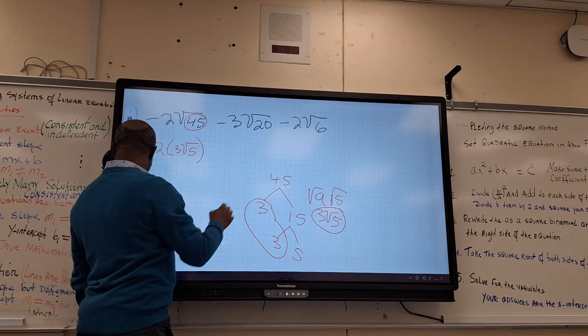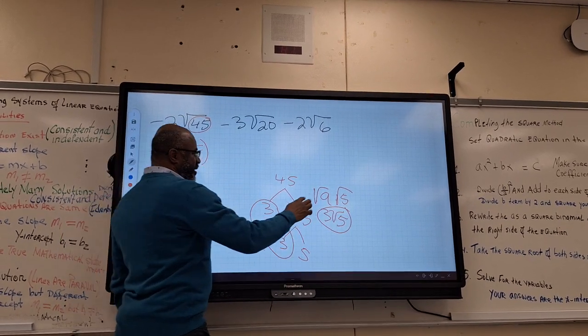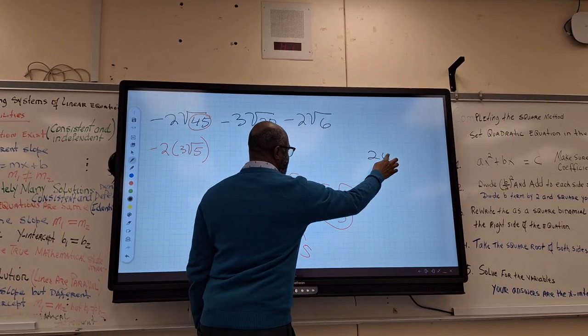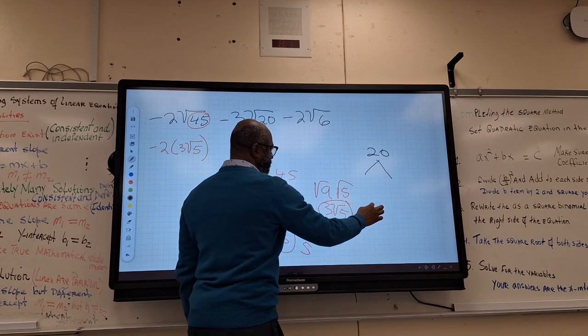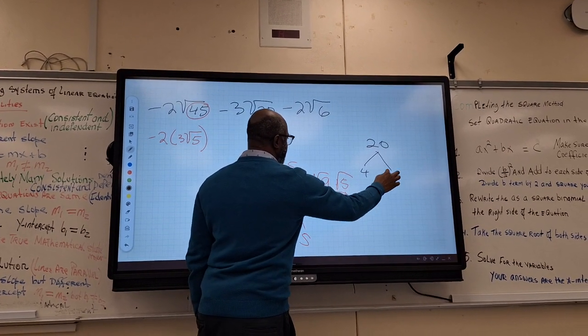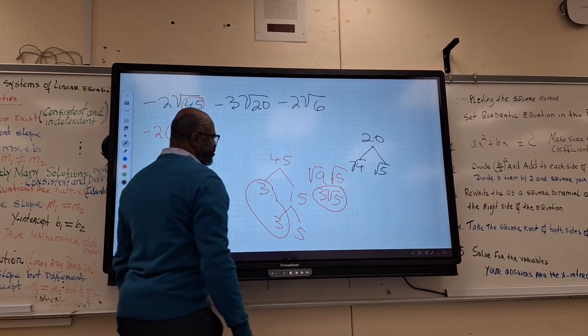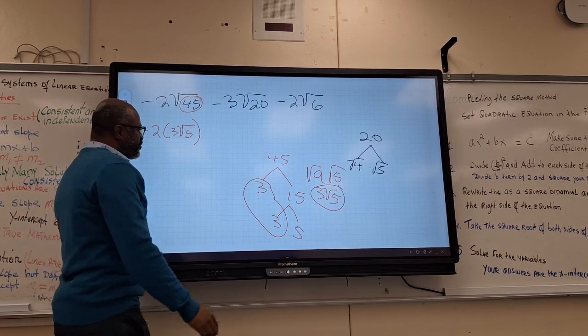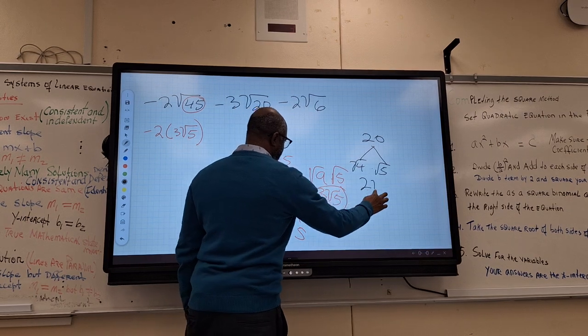Right here, 20. How will you break 20? 20 is what? 5 and 4. Then you take square root of each one of them. This will give you what? 2 root 5.